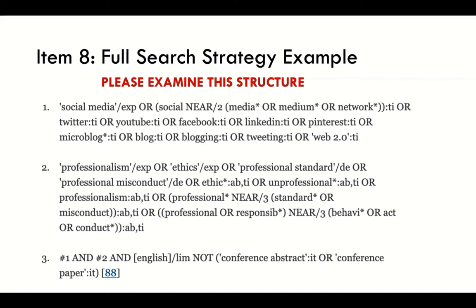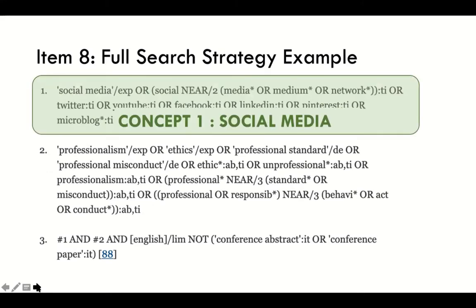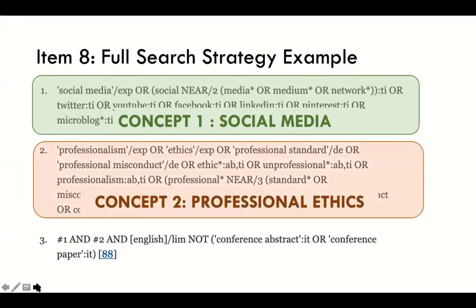The second part of the search is all about professionalism, professional ethics, professional behavior — it's a second chunk. So we have two chunks, not connected, each separate. Then look at chunk number three: we have concept one, then AND concept two, and a whole bunch of limits. So here we actually have the final search — we achieve concept overlap and introduce some limits. This is, in a nutshell, the basic structure of structured searches.